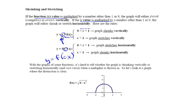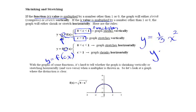The rules are: if that constant value c is a fraction — notice all values between 0 and 1 on the real number line are fractional values — we are going to shrink the output of that original function. We'll get one-third the y values from our parent function y equals x squared. If that value is greater than 1, we are going to get a stretching of our graph, with output values three times what they would be on the parent function y equals x squared.